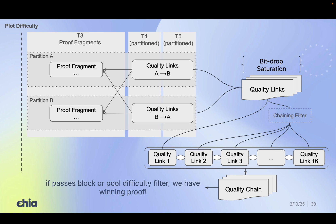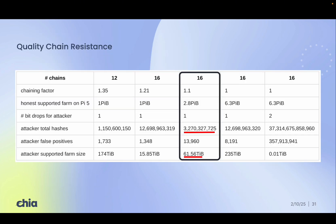This defers the expensive proof reconstruction only until when it's needed, so that keeps energy use low and performance efficient for farmers. Attackers trying to drop even 1 bit per quality link face an exponential explosion in false positives. For instance, 1 bit drop compounded over 16 links yields over 3 billion hashes, already near the cost of a full plot grind. At 2 bits dropped, the number of required hashes jumps into the trillions, making this attack entirely impractical.